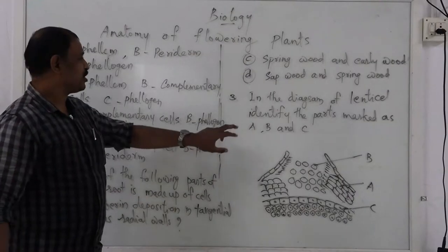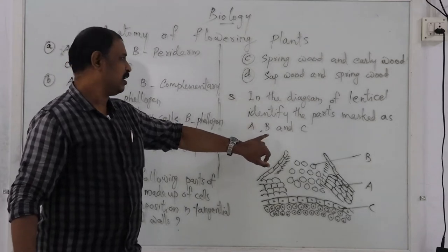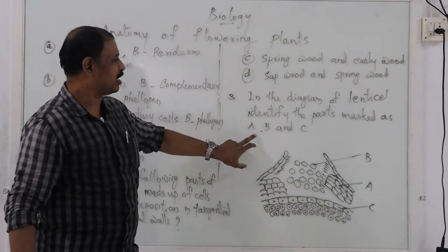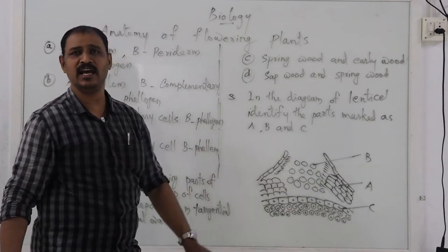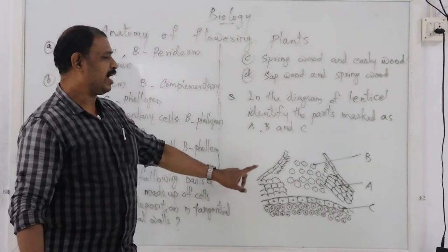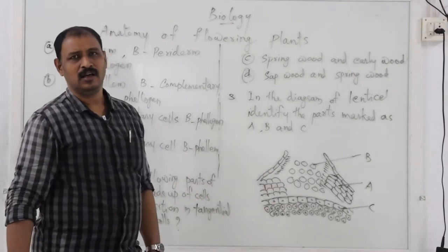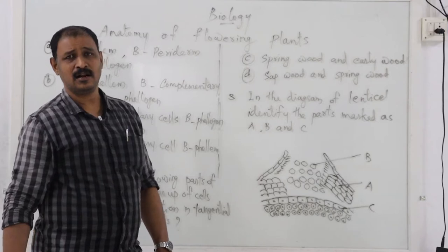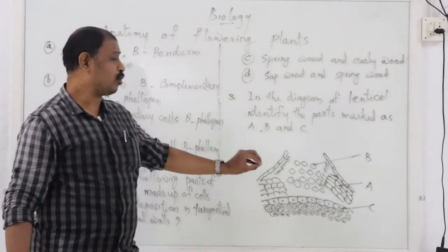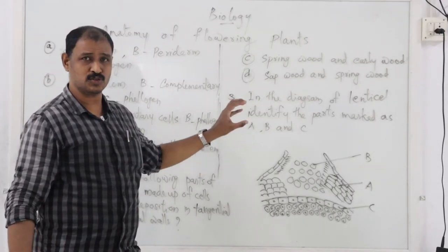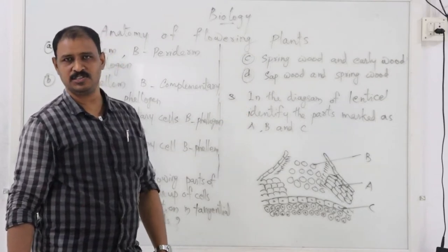Next question: in the diagram of a lenticel, identify the parts marked as A, B, and C. Lenticels are micro-openings or small pores on the surface of the stem.